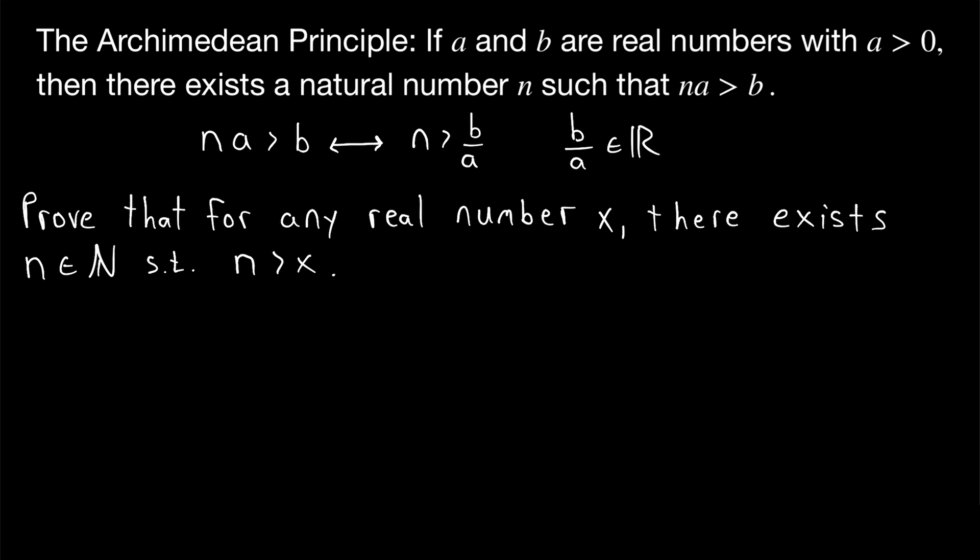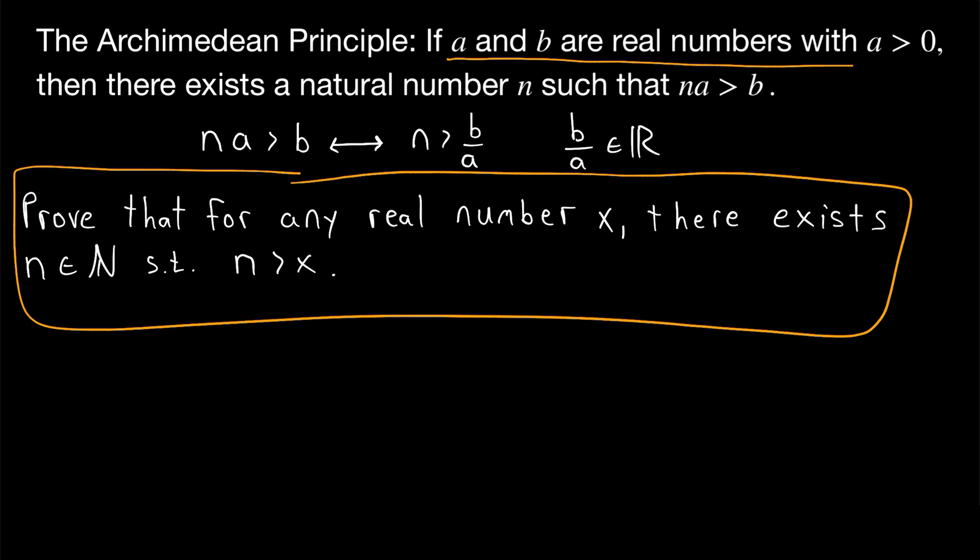We want to prove that for any real number X, there exists some natural number greater than X. This means that the natural numbers are not bounded above by any real number. Once more, just to emphasize how proving this is the same as proving the original form, given real numbers A and B with A greater than 0, I can just set X equal to B over A.